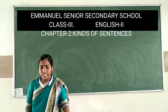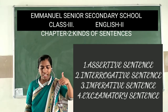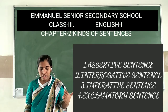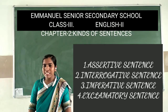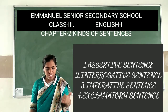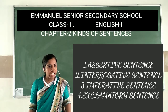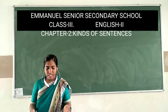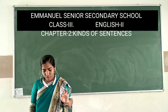There are four kinds of sentences: the first one is assertive sentence, the second is interrogative sentence, the third is imperative sentence, and the fourth is exclamatory sentence. In this chapter we are going to discuss about assertive sentences and interrogative sentences.